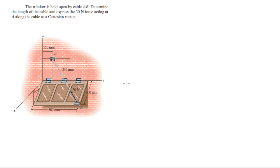Alright guys, now we're going to do this problem that says the window is being held open by cable AB. Determine the length of the cable and express the 30 newtons force in Cartesian vector form.